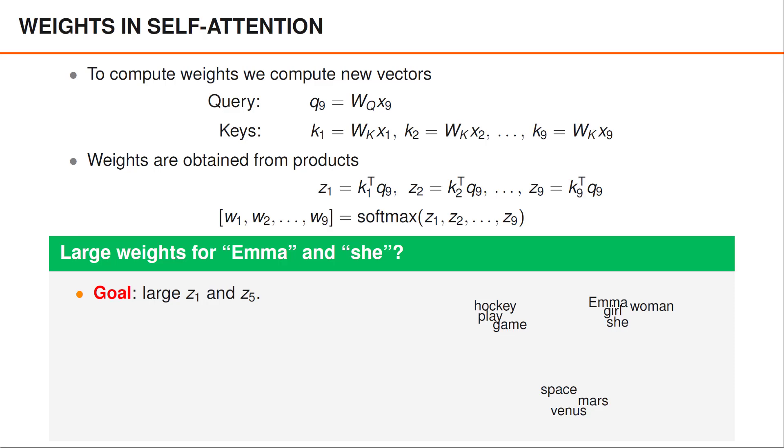And the same is true for words like Mars, space and Venus. Most likely the words Emma, girl, she and woman would also appear in the same region.